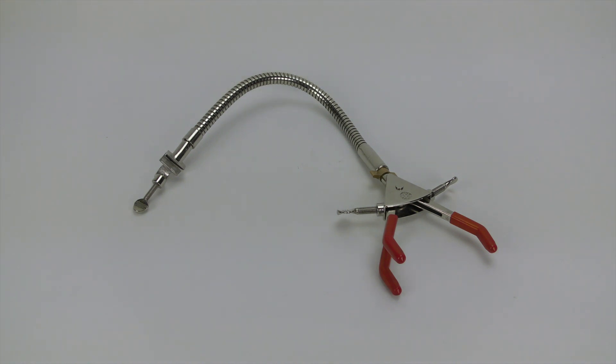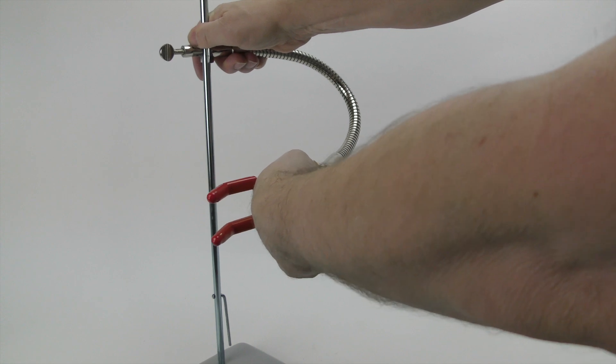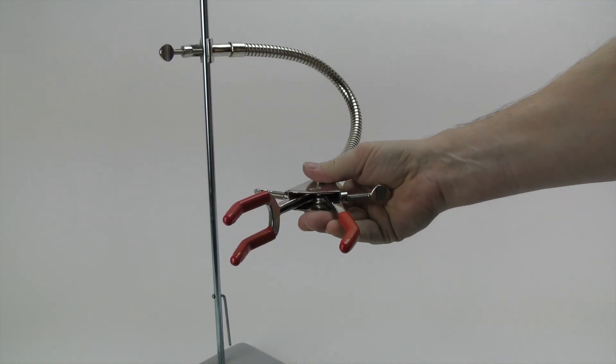This clamp has a 12 inch long flexible arm that allows you to customize how it is orientated. The arm takes a little effort to hold its shape, but that ensures that it stays put and holds your apparatus exactly where you want it.